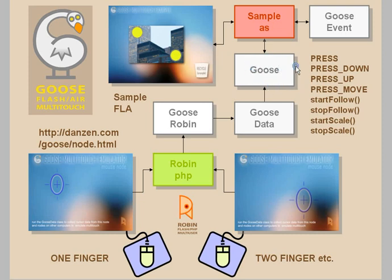Goose is our processing class. It provides methods like start follow, stop follow, start scale, and stop scale, as well as Goose events for press, press down, press up, press move, and more. You use these in your application document class. A sample document class is provided, and we'll take a look at how Goose is used there to bring cursor data in and allow you to move and scale pictures, press on buttons, etc.